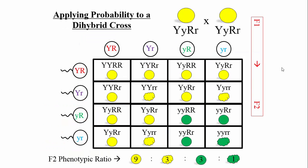Now let's discuss the branching method for a dihybrid cross. A standard Punnett square gives the familiar 9:3:3:1 ratio for seed color and shape. Big Y encodes yellow seeds, little y encodes green (only expressed as yy), big R encodes round seeds, and little r little r encodes wrinkled seeds. The double mutant — yy and rr — would be green and wrinkled.